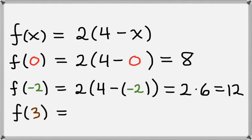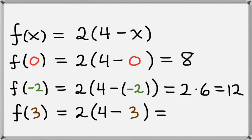What about f of 3? Well again we're going to plug in 3 for x this time. So we have 2 times 4 minus 3. Well that's the same as 2 times 1, which is just 2. So f of 3 equals 2.